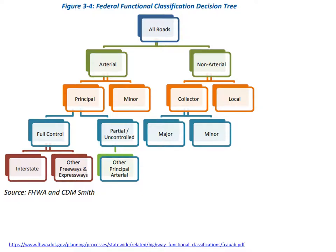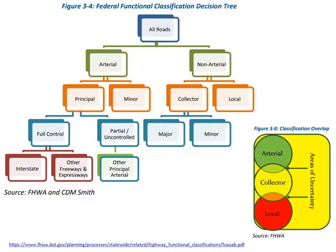It is important to note that some roadways are easily classified. An interstate highway is clearly an arterial, and a neighborhood street with residences every 100 feet is a local street. However, there are areas of uncertainty at the transitions between each class, as some roads may not fit neatly into one class, and a road's function may even change over time as land use and travel patterns change.